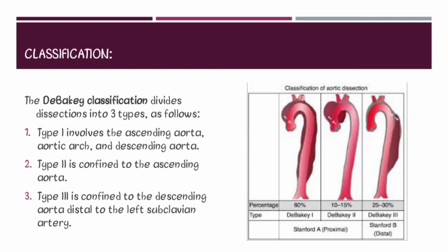Now the classification of aortic dissection — there are two types of classification. The first is the Stanford classification, which has two types: Stanford A, also called proximal, which includes DeBakey type 1 and DeBakey type 2; and Stanford B, also known as distal, which includes only DeBakey type 3.